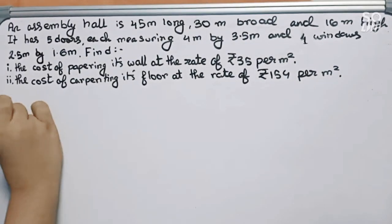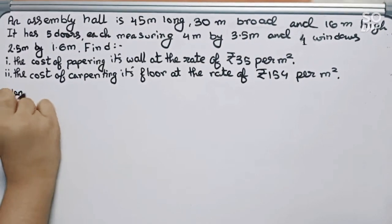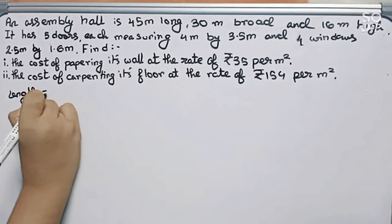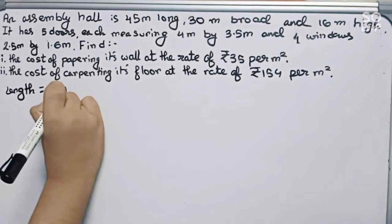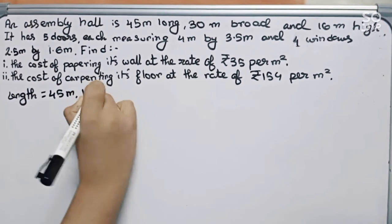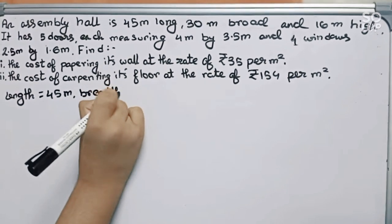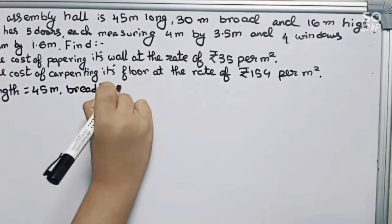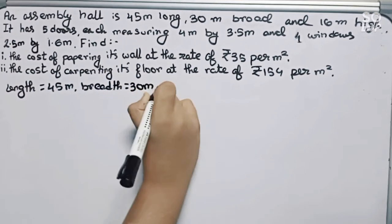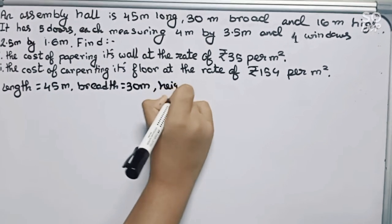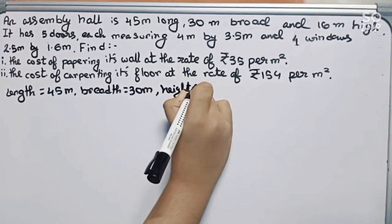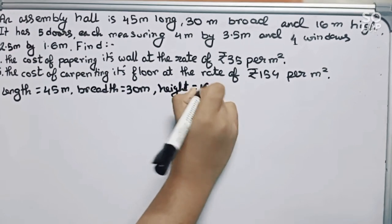So first, the length is given as 45 meter, breadth equals 30 meter, and height equals 16 meter.